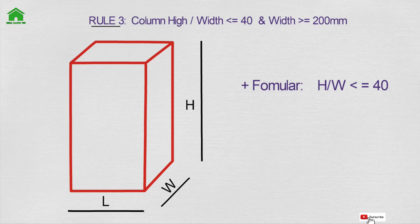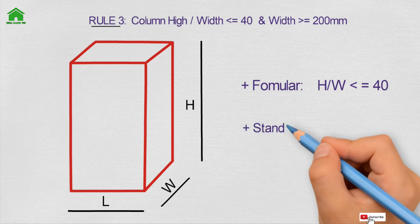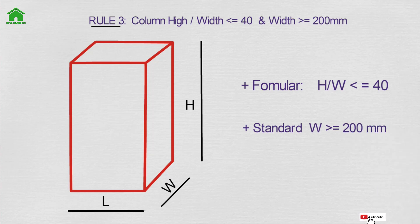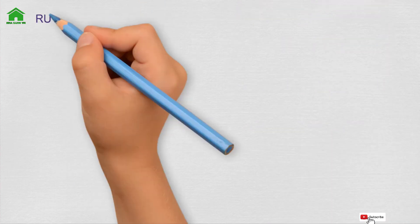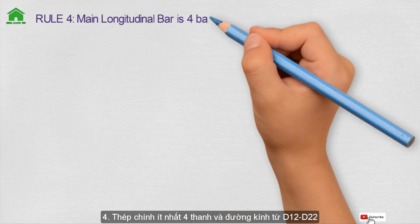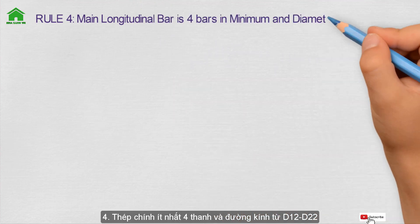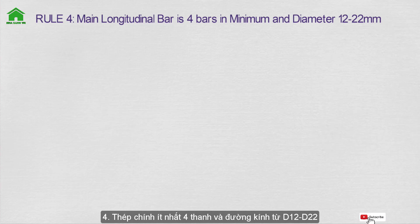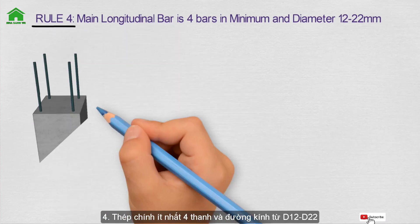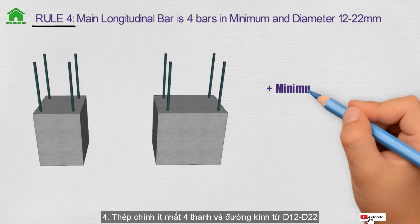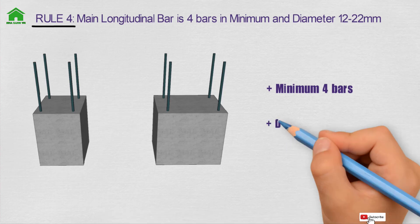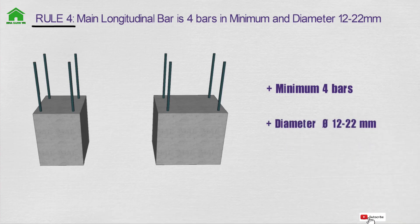Rule number three: the column height-to-width ratio should be under 40, and the width should be over 200 mm. Rule number four: the main longitudinal bars are a minimum of 4 bars, with a diameter from 12 to 22 mm.